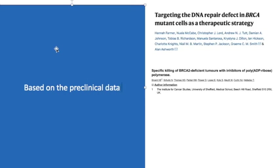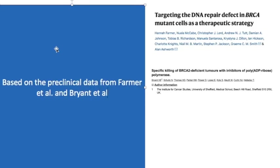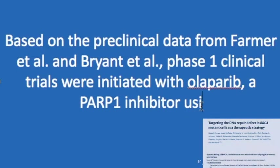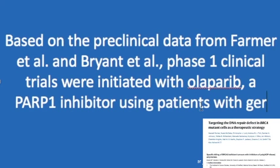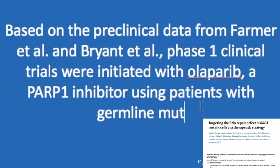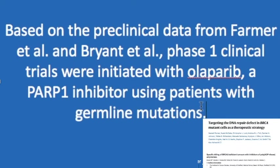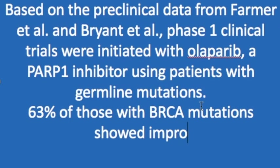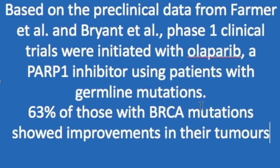Based on the preclinical data from Farmer et al. and Bryant et al., phase 1 clinical trials were initiated with olaparib, the PARP inhibitor, including patients with germline BRCA mutations. Lo and behold, 63% of those with BRCA mutations showed improvement in their tumors, confirming that there was indeed synthetic lethality between BRCA1 and 2 mutations and PARP inhibition.